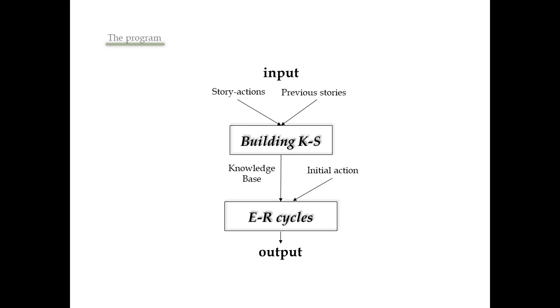So in summary, we have two text files that are built by the user: one is the dictionary of story actions, the other is the file of previous stories. With this input, Mexica builds its knowledge base. Then the user provides an initial action and the engagement-reflection cycles start until a new narrative is generated.